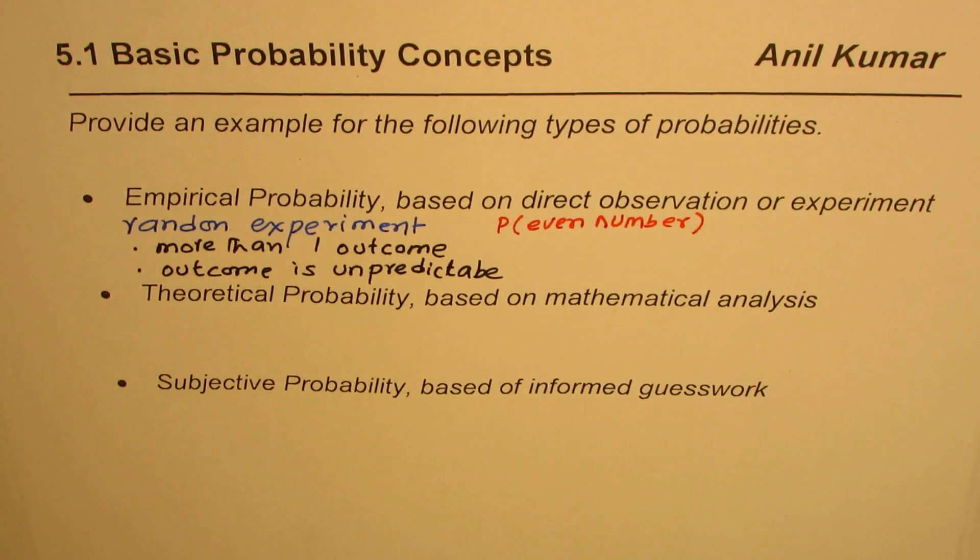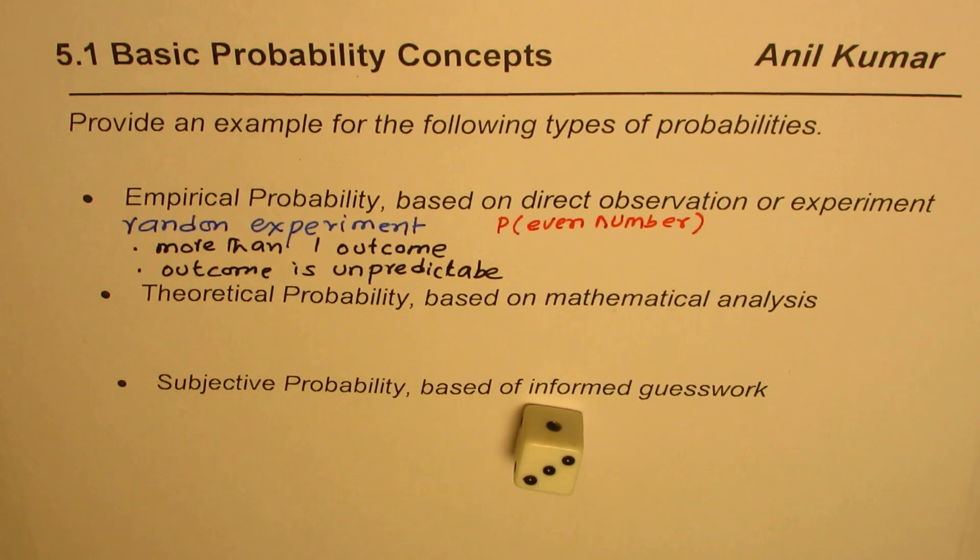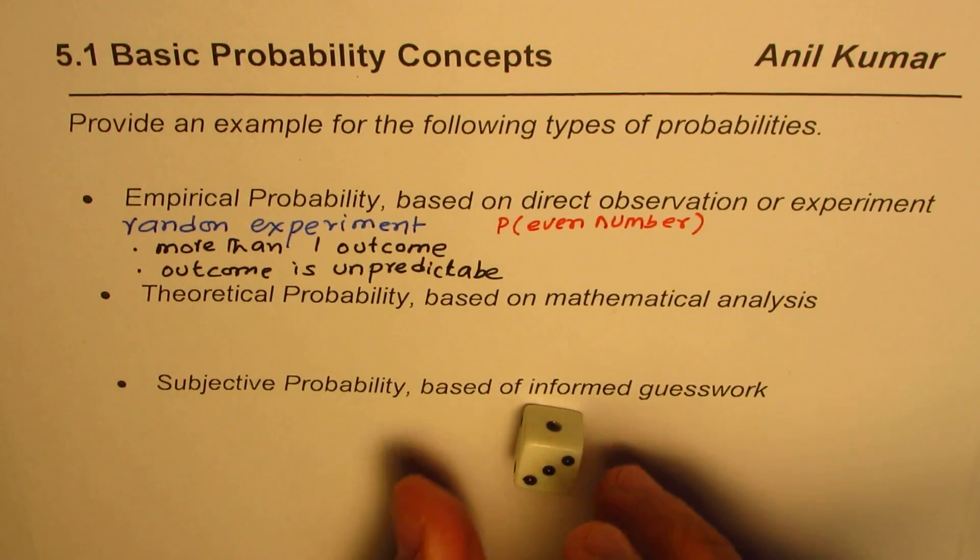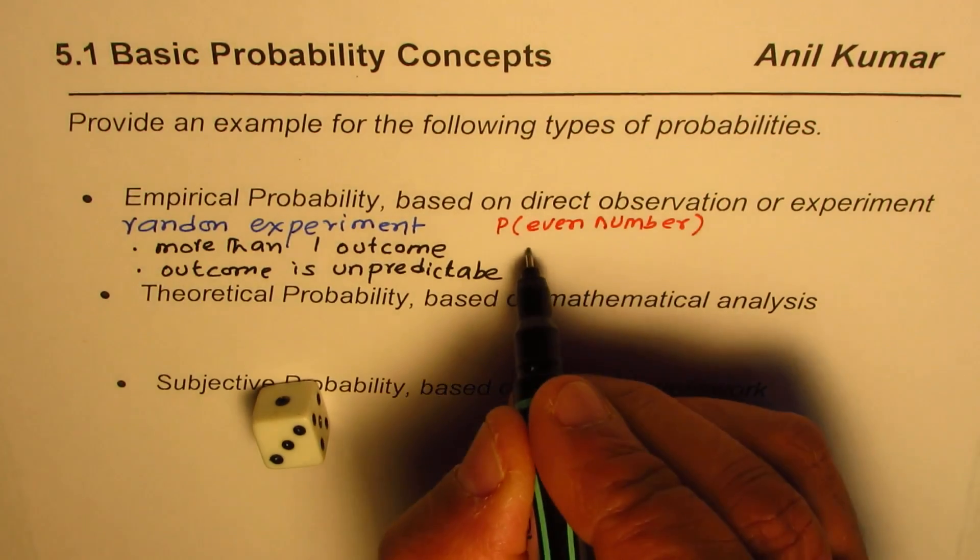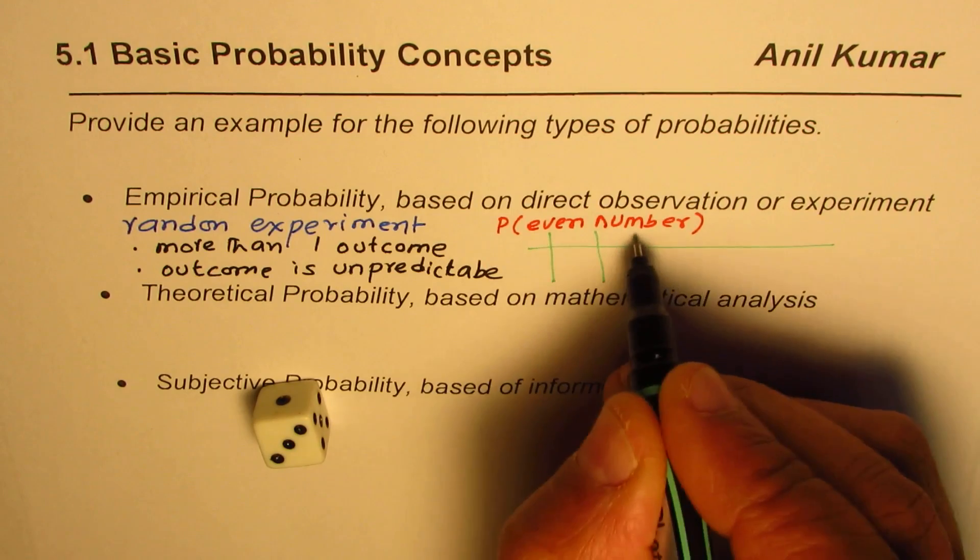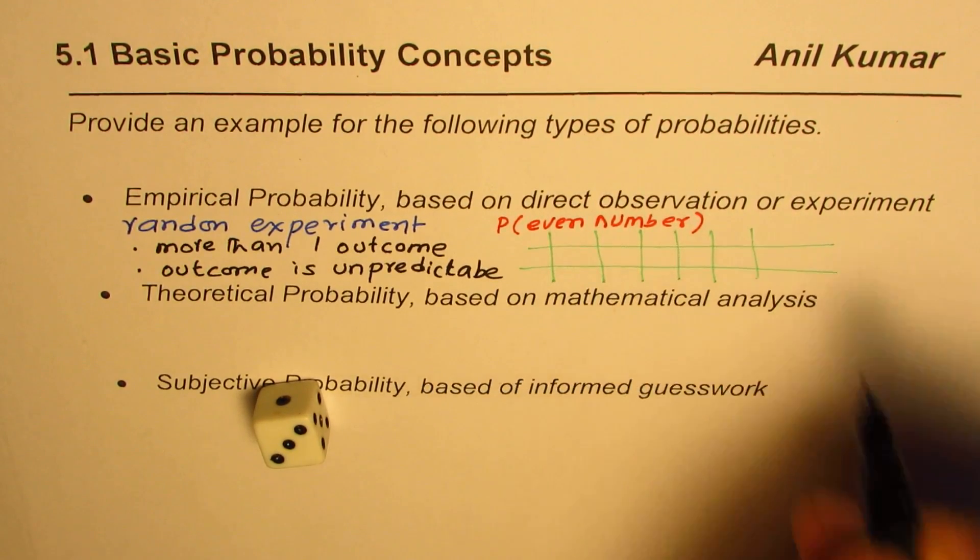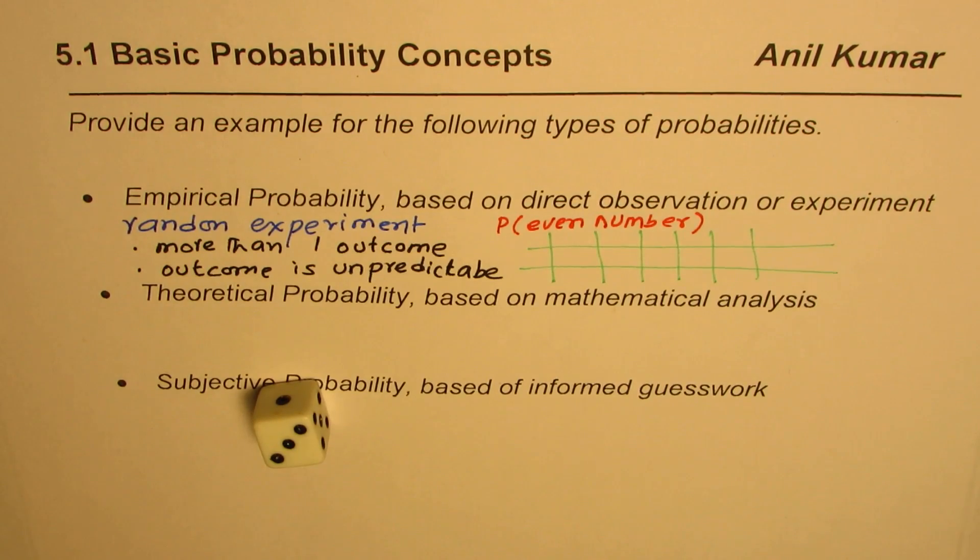So in that case what do we do? We just roll the die and then write down the numbers which we get. For example let me roll the die here. We get number three. So what we do here is we kind of make a table and record the values. So we'll just make a table here.